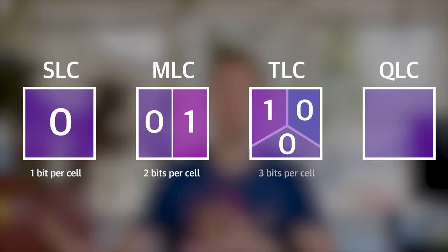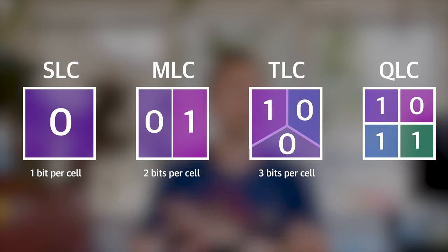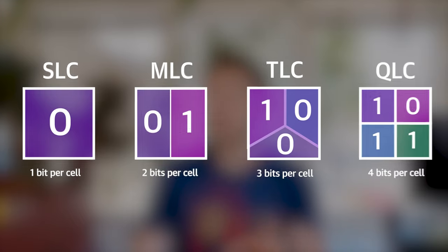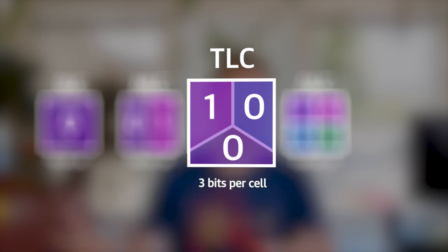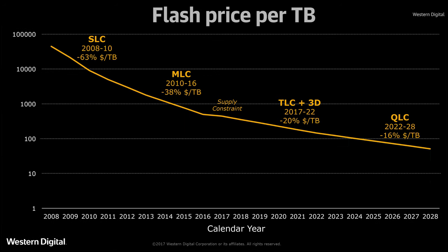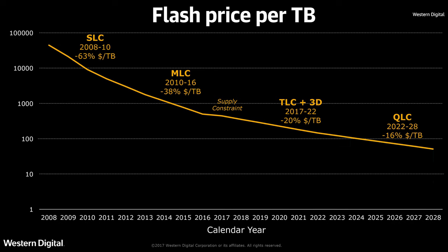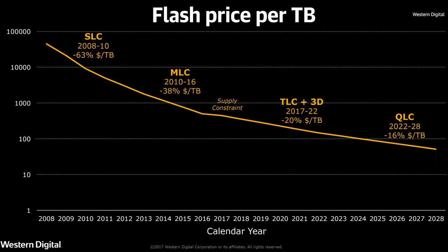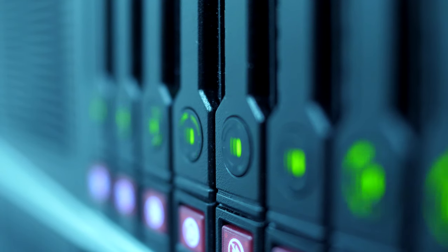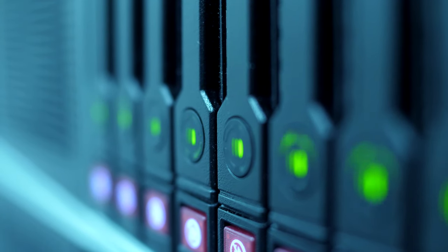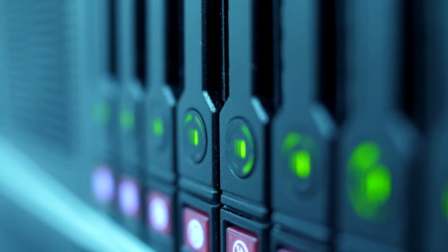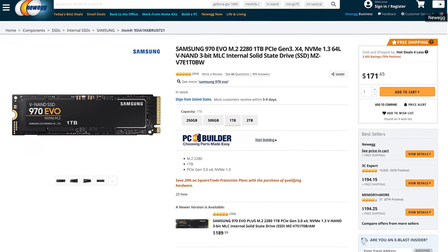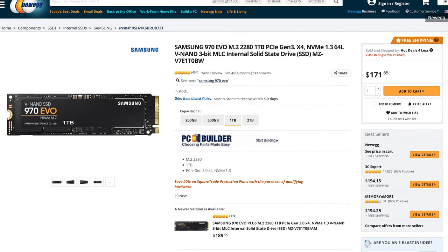MLC can store twice the data per transistor that SLC can, and QLC doubles that number again. The flash that is in your computer and phones at this moment is almost certainly TLC — triple level — which stores three bits per cell. This boost in capacity per cell has been the biggest driver in making flash more widespread and more economical. SLC drives are pretty much only limited to high-end data centers now, and even MLC is pretty rare in consumer devices. A high-end TLC drive is still pretty fast, but only costs between about 13 to 18 cents per gigabyte, which is way cheaper than SLC.